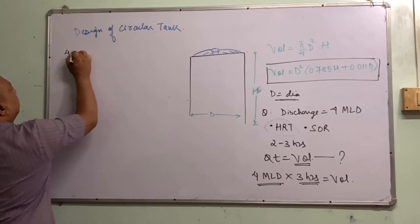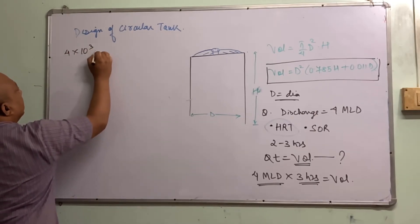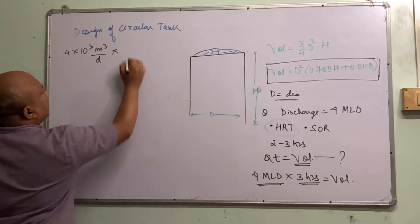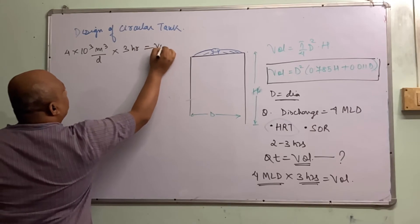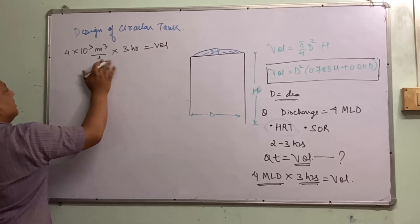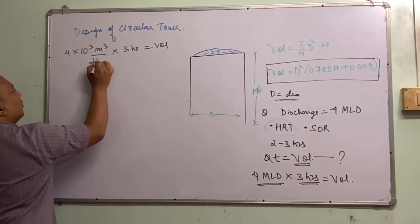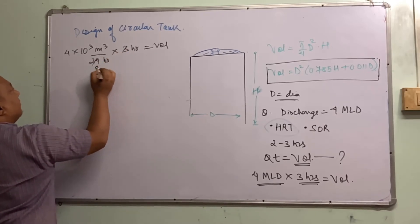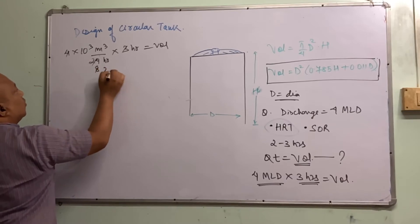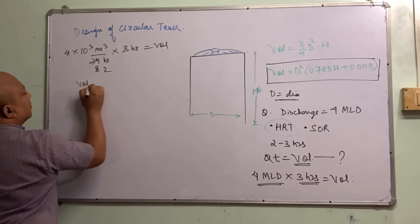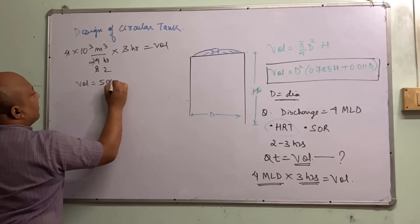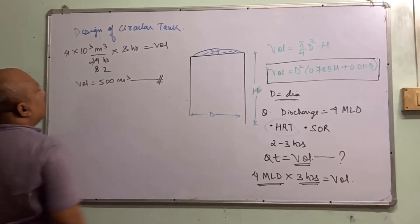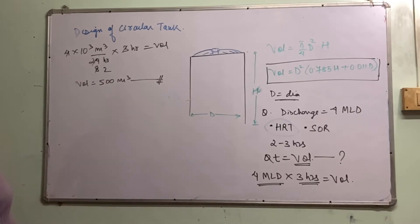4 MLD means 4 × 10⁴ m³/day. Multiplying by 3 hours and dividing by 24 hours gives: Volume = (4 × 10⁴ × 3) / 24 = 500 m³. So the design volume is 500 m³. Note that using pi/4 × D² × H directly would give different values.